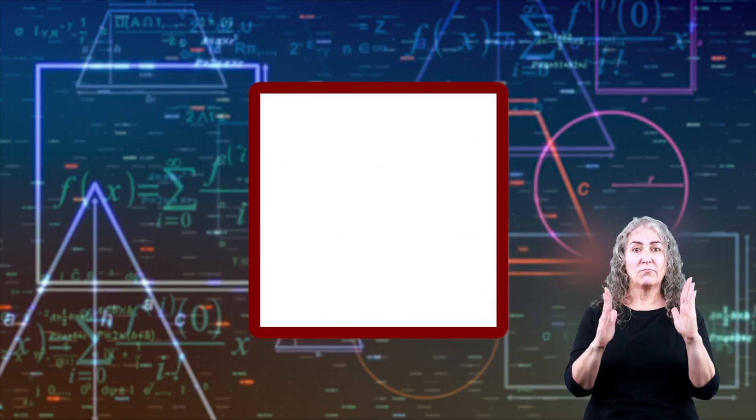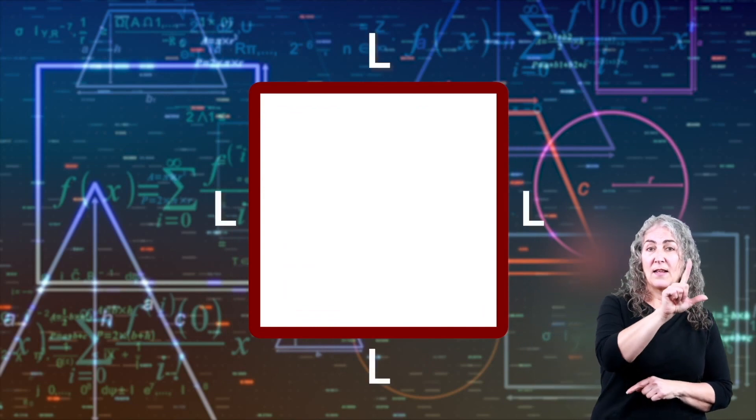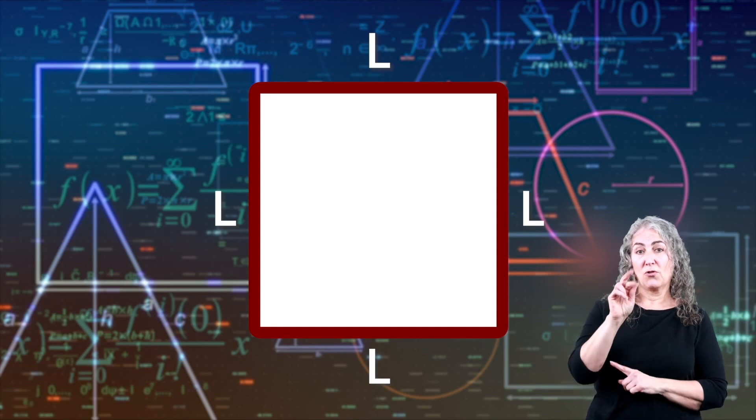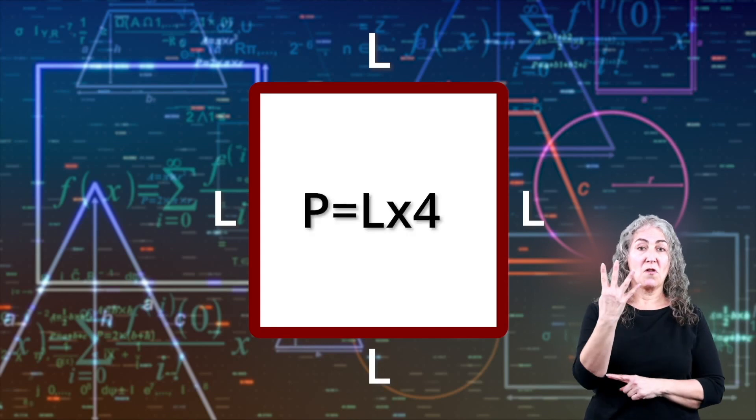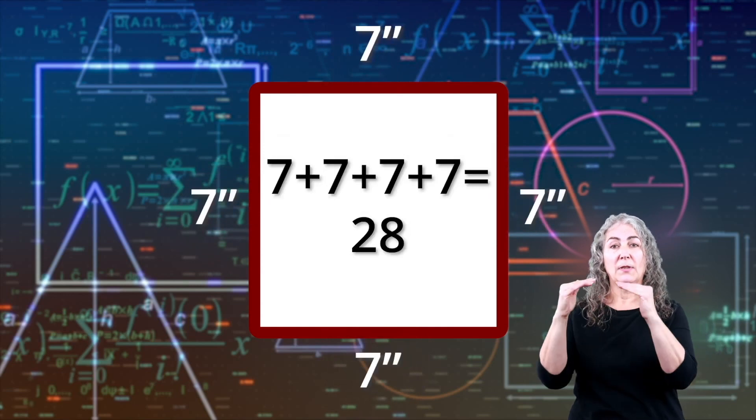But what if you have a square? Well, that's even easier. Since all four sides of a square are the same length, the perimeter of this square yard would be the length times 4. 7 plus 7 plus 7 plus 7, or 28.